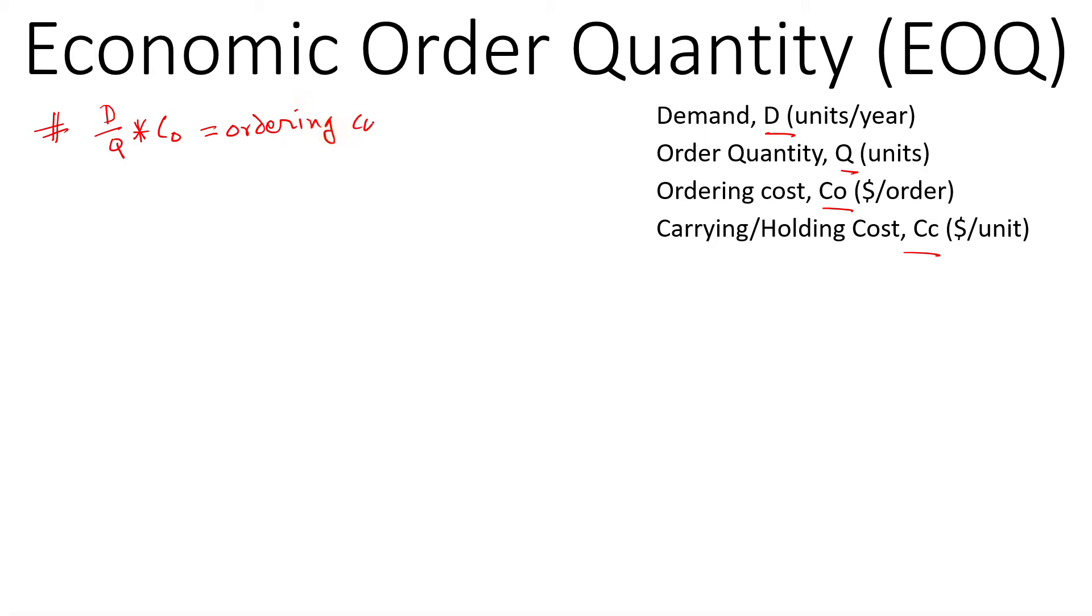For carrying cost, we have to determine the number of inventory that we are carrying on average for the entire time period. So if you think about the timeline, let's assume that we receive an order today of Q amount, and then we start using that. So the y-axis is the inventory. Assume that we receive Q amount today right here.